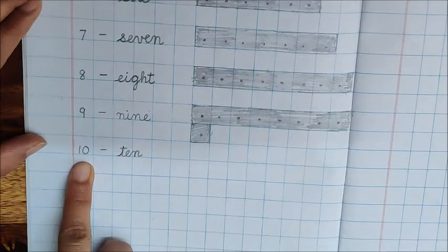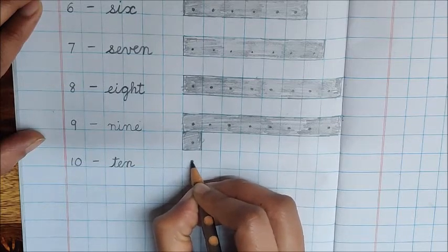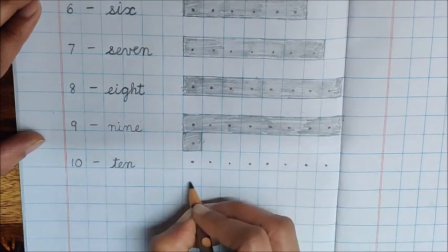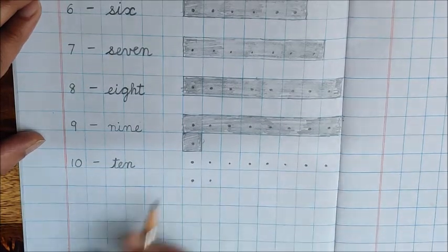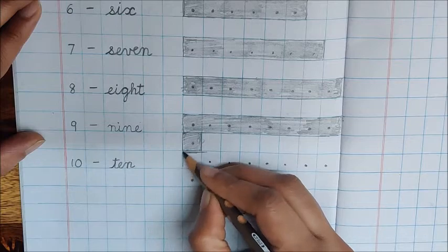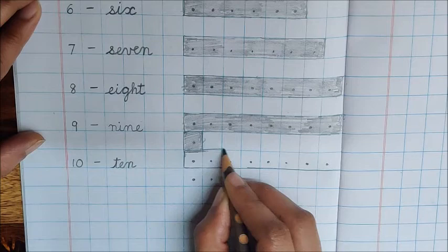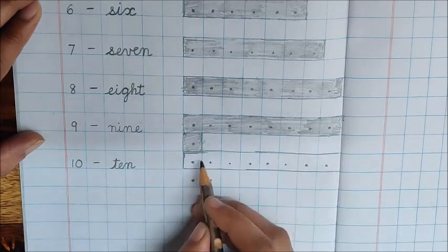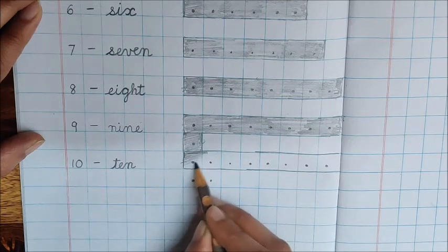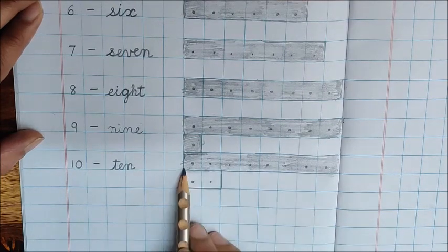Now last number is 10. So make 10 dots now. Leave 2 boxes and make 10 dots: 1, 2, 3, 4, 5, 6, 7, 8, 9, 10. Now do shading. We have made 1 dot in 1 box. Shading time. Now 2 more dots are left. Shade these also.